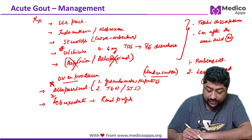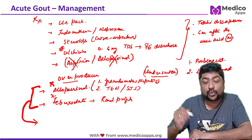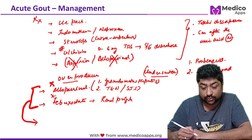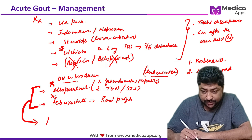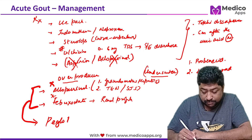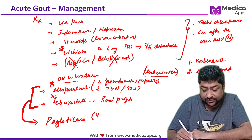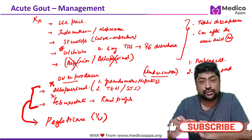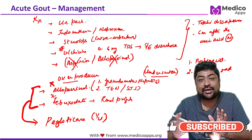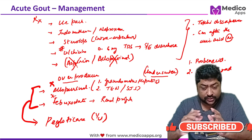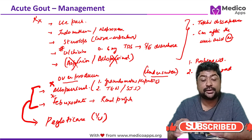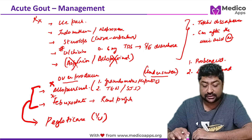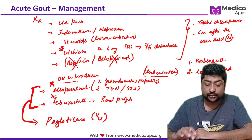Another important examination question is the treatment of chronic refractory gout. Pegloticase IV is used in cases of refractory acute gout and chronic gout. Acute gout is a very important topic with many direct and indirect exam questions.